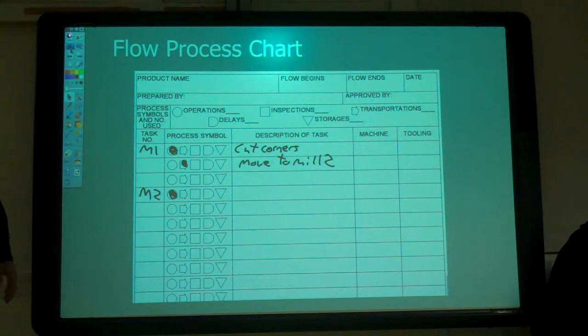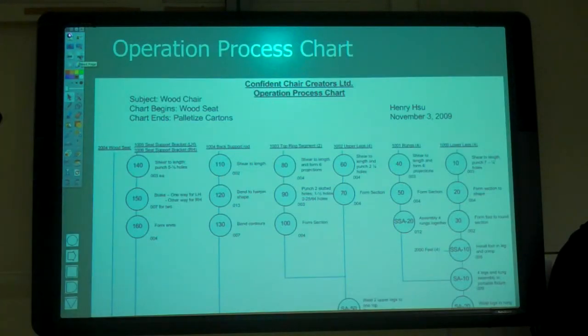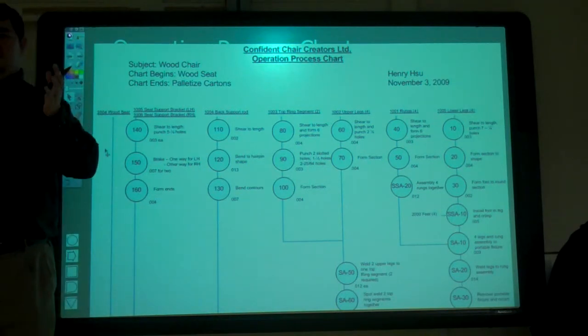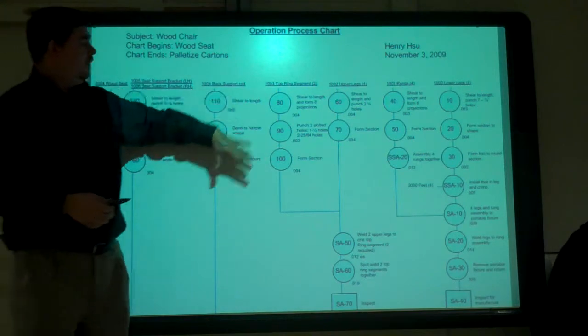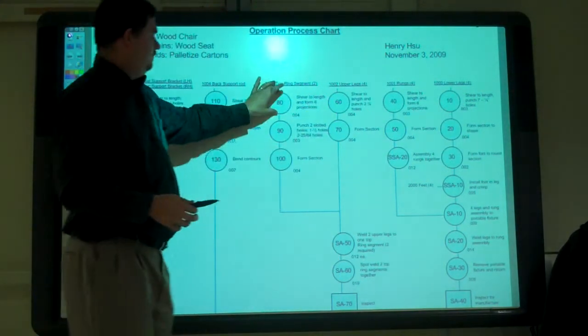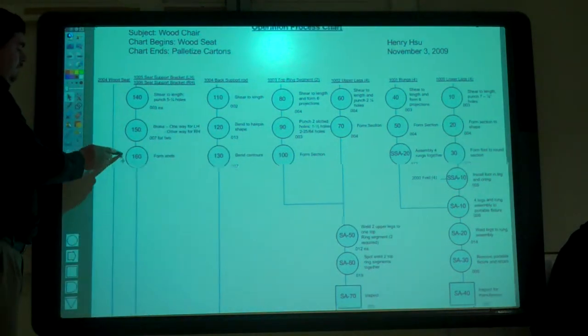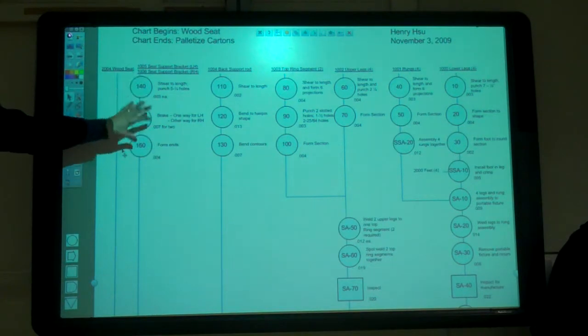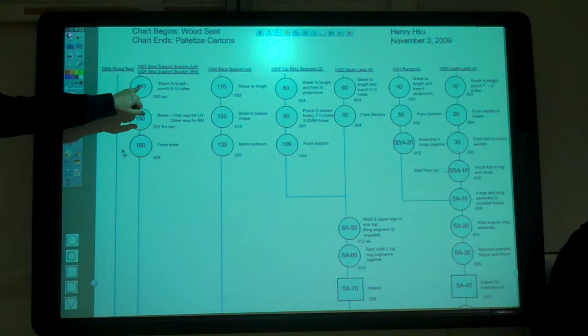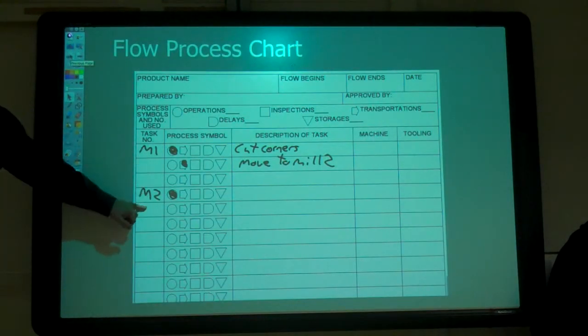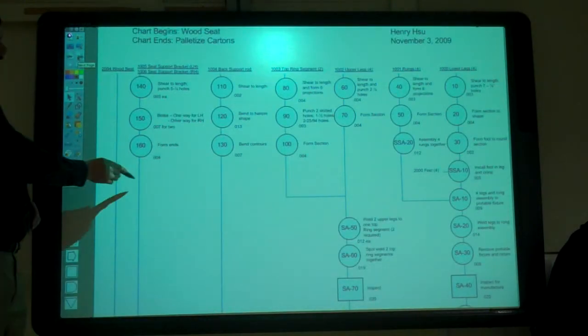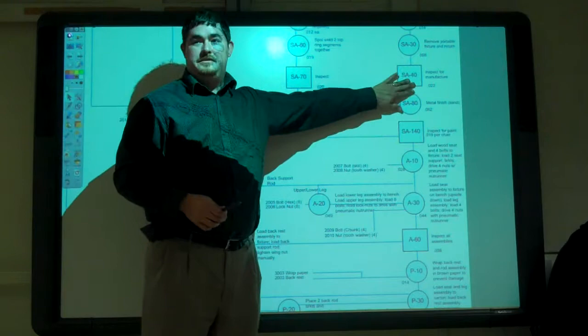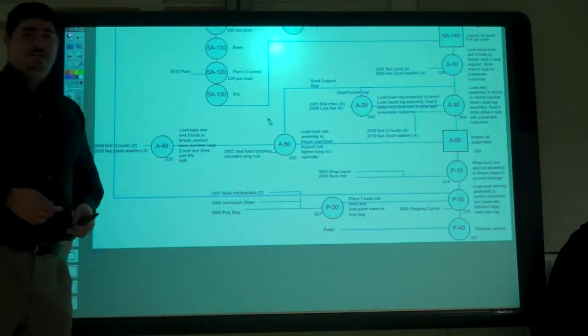For the next one, we'll do an operational chart. Before we were looking at just each part by itself. Now we're looking at the whole assembly. Each one of these columns is a part. We're just going to put in the operations that are being done on each part, not worrying about transportation or delays. The number in here is the number from the flow chart. We can see how they come together, when they join for assemblies, when we have inspections, going down the whole process.